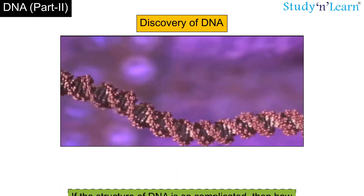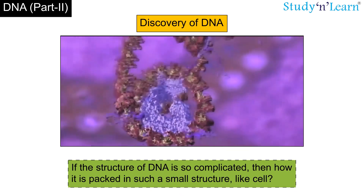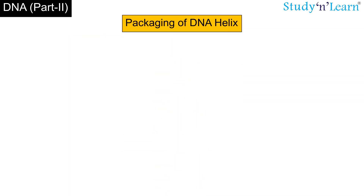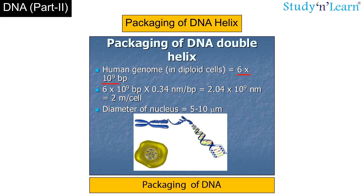Now you must be thinking — if the structure of DNA is so complicated, then how is it packed in such a small structure like a cell? Let us discuss the packaging of the DNA helix. A diploid cell contains 6 × 10⁹ base pairs. Taking the distance between two consecutive base pairs as 0.34 nm (0.34 × 10⁻⁹ meters), the total length of DNA double helix in a typical mammalian cell is calculated by multiplying 6.6 × 10⁹ base pairs by 0.34 nm per base pair, which comes out to be approximately 2.2 meters — far greater than the dimension of a typical nucleus, which is around 5 to 10 micrometers.